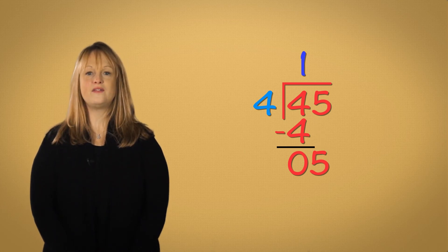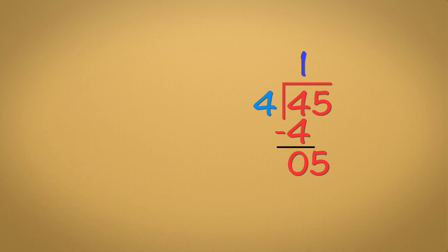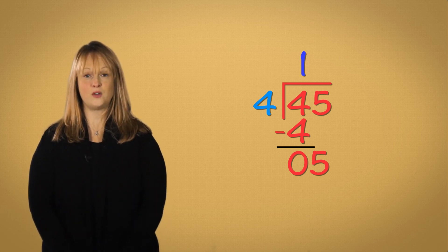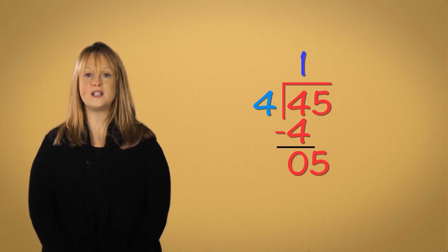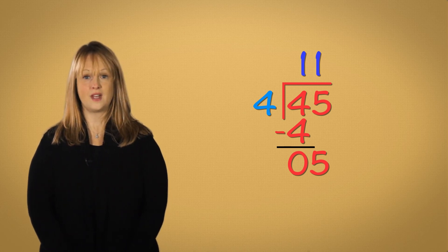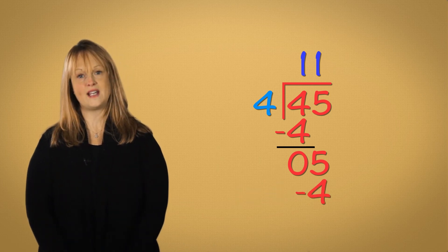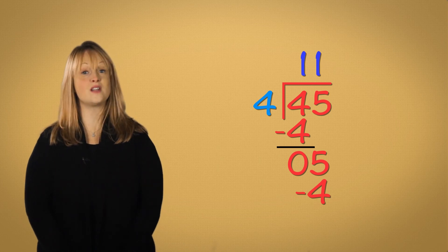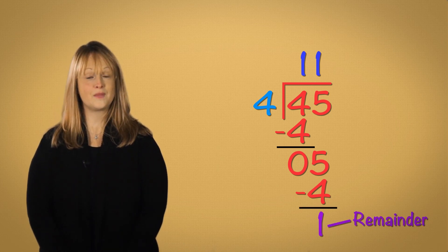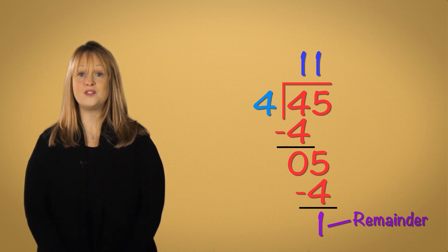Next we bring down this five. How many ones can five give to each of the four groups? We know from our place value chart that five can give one disc each to four groups. So one goes up here. Then one times four equals four. We place the four down here and subtract. Five minus four gives us one left over. So what is our final answer? What is forty-five divided by four?